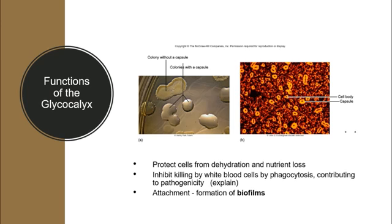The glycocalyx also protects the cell from dehydration and nutrient loss, and inhibits killing by white blood cells through phagocytosis — contributing to pathogenicity. In terms of attachment, the glycocalyx layer produces many carbohydrate moieties on the surface that create long-lasting, tight, and strong interactions between the bacteria and environmental components, thus forming biofilms. Biofilms are so complex in terms of adhesiveness that we cannot easily scrape out the bacterial cells — that's why you have biofilms in your teeth.